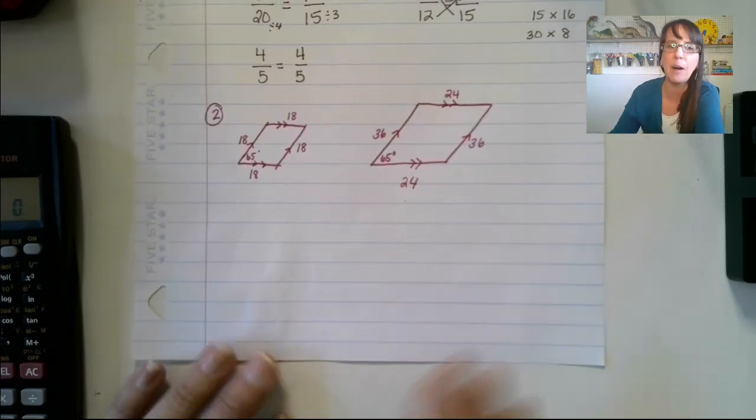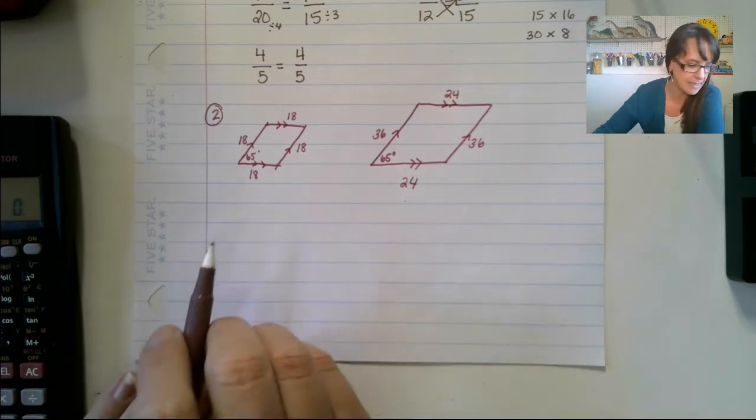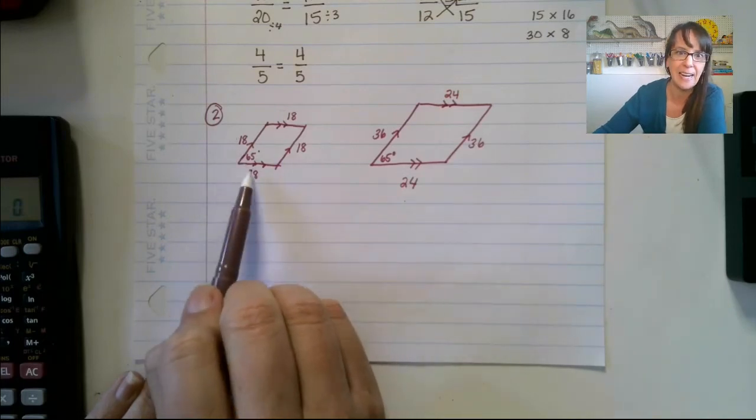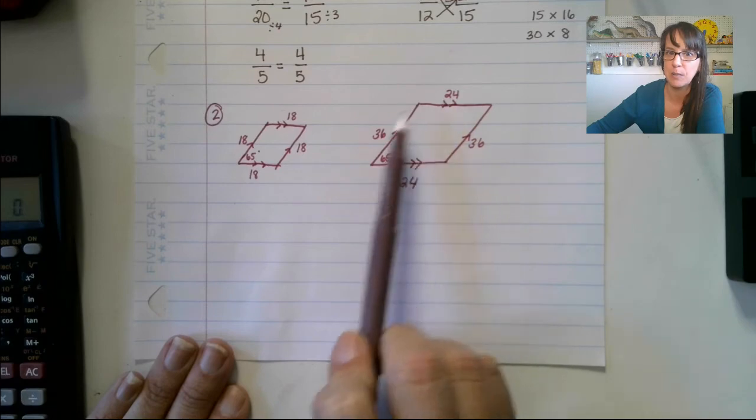All right, let's take a look at number two. Again, pause the video. Go ahead and draw those out so you have them in your notes. Okay, so this time, straight away, we can see that these are, this is 18, 18, 18, 18. But this one over here is 24, 36, 24, 36.